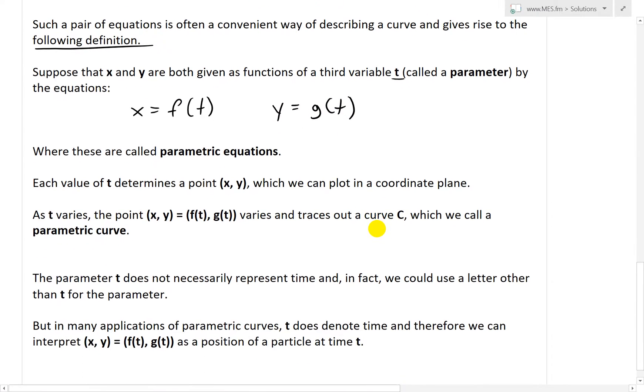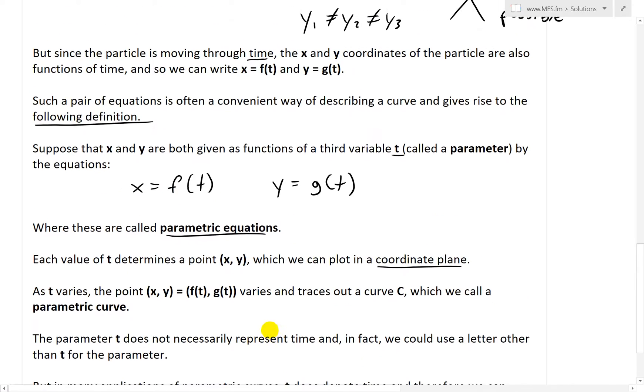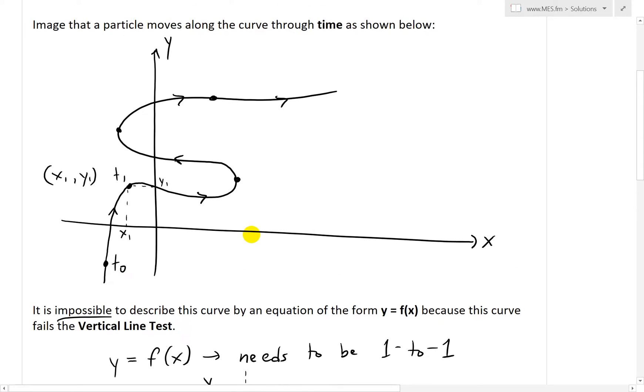And we're now going further in the definition, where these are called parametric equations. Each value of t determines a point (x, y), which we can plot in a coordinate plane. As t varies, the point (x, y) equals (f(t), g(t)) varies and traces out a curve, which we call a parametric curve. And we can see this over here if we just plot these points out.